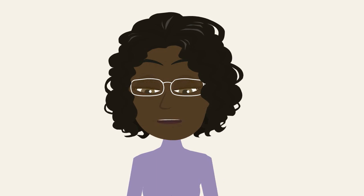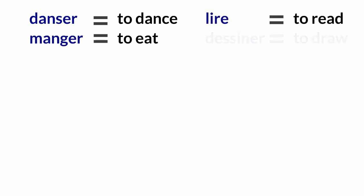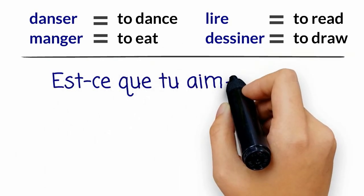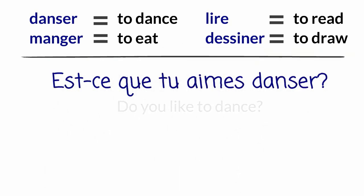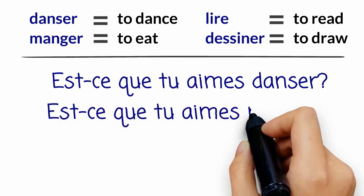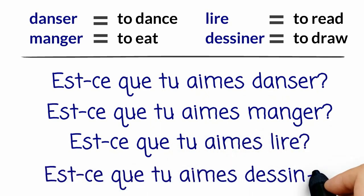Let's review a few expressions that you already know. Danser means to dance. Manger means to eat. Lire means to read. And dessiner means to draw. What would est-ce que tu aimes danser mean? If you guessed 'do you like to dance?' — très bien! Here is how the questions about the other activities would look and sound: Est-ce que tu aimes manger? Est-ce que tu aimes lire? Est-ce que tu aimes dessiner?